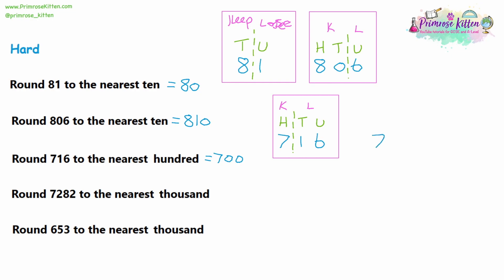Next, we have 7,282. Label the place values: units, tens, hundreds, thousands. We're rounding to the nearest thousand, so rule off after the thousands. We're keeping the 7 and losing the 2, the 8, and the 2. Check if we're rounding up — the first number we're losing is 2 in the hundreds, which is lower than 5, so we are not rounding up. We write down 7, and since we're losing hundreds, tens, and units, we fill up with zeros. The answer is 7,000.